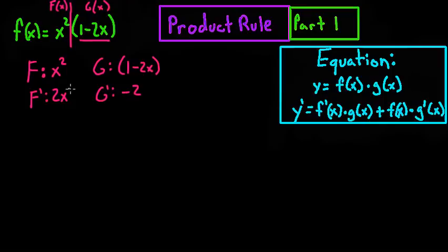The first thing you're going to do is multiply, as the equation states, f'(x) times g(x). So you're going to multiply this - that's your first step. And it's going to give you 2x minus 4x squared.